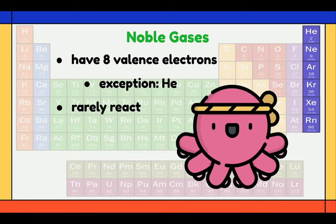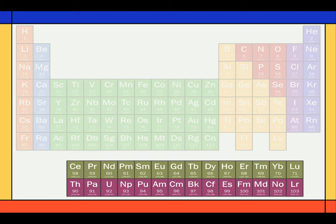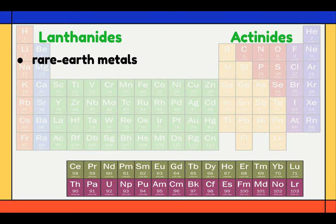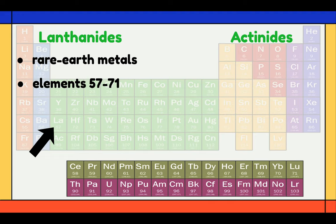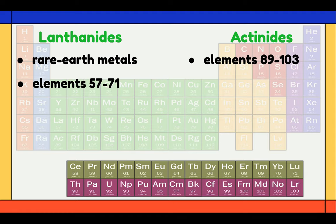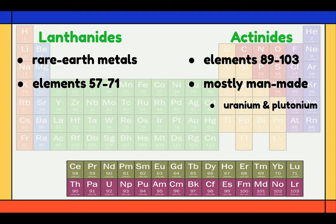Those 2 rows of elements that are below the main periodic table actually fit into the table right after Group 2A. They are often shown below the main table because the table would be too long to fit on the page. These elements are also called rare earth metals, and they comprise elements 57 to 71. They have properties similar to lanthanide, which occurs at the beginning of the row with atomic number 57 — that's why they are called lanthanides. Actinides are elements from 89 to 103, and these are mostly man-made elements that don't exist in nature, with two exceptions: uranium and plutonium.